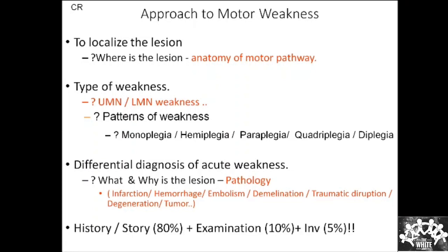In taking history for motor weakness cases, you should consider the onset, its progression, and associated features — higher mental function, loss of consciousness, seizures, diplopia, and nasal rigidity — to help localize the lesion. Root pains and sensory deficit levels also help localize. I believe that 80% of the time you will arrive at a reasonable diagnosis at the end of the history. Methodical examination adds another 10%, and investigations add 5% more, with the remaining 5% sometimes remaining unresolved despite all investigations.